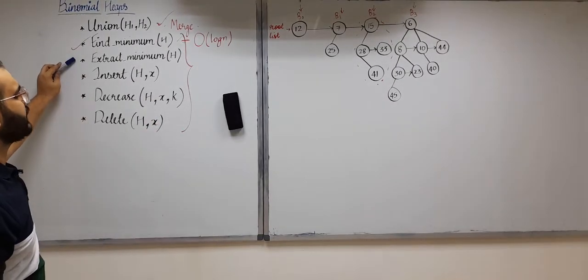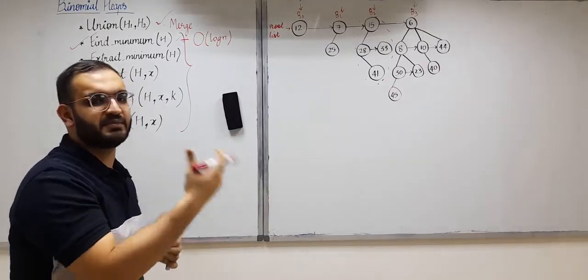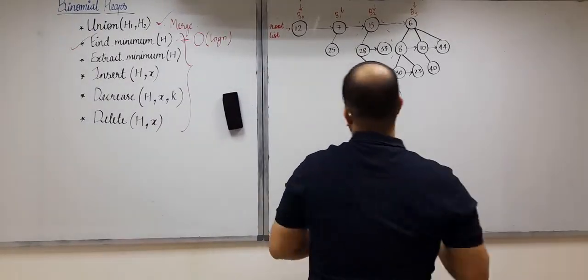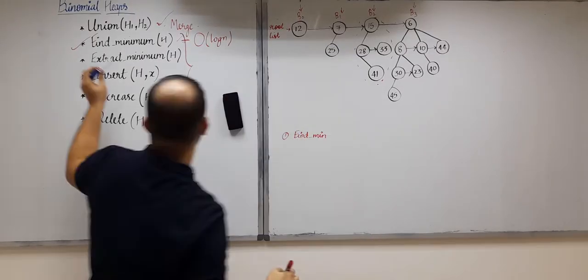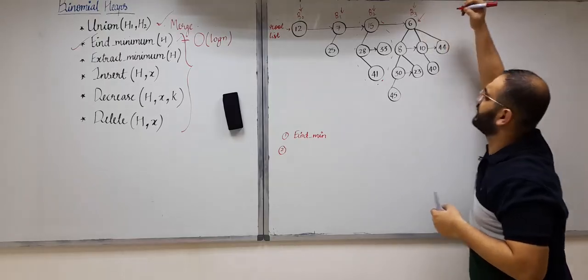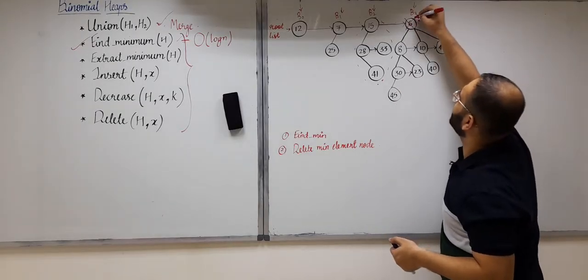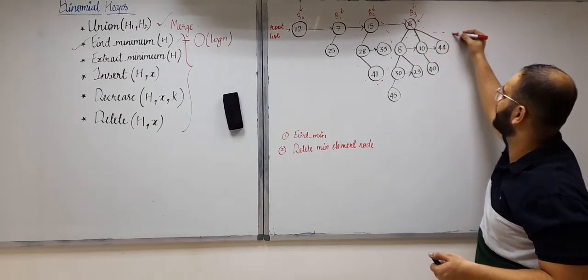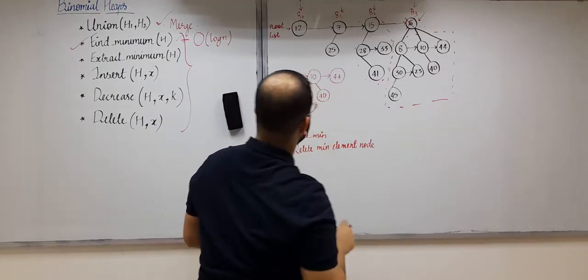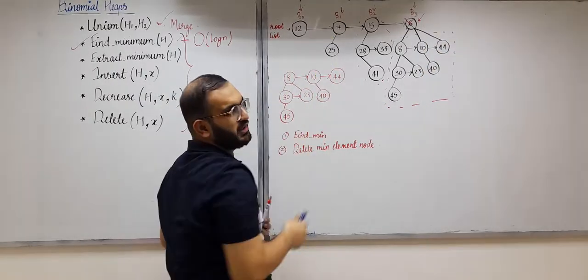The second operation is extract minimum, also called delete minimum. In the first step, you find the minimum element. In the second step, you delete that minimum element node. However, you are still left with all its descendants — those are not deleted along with the minimum node.